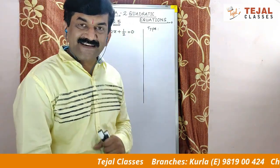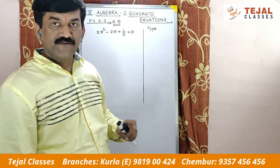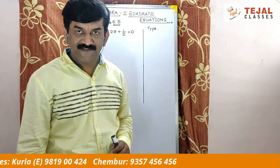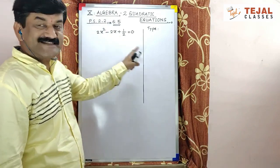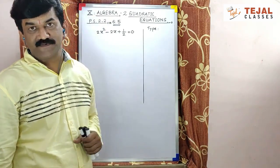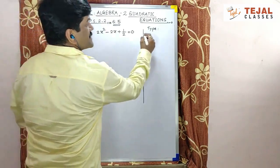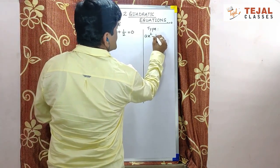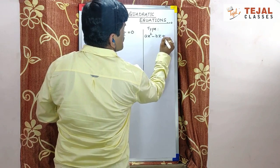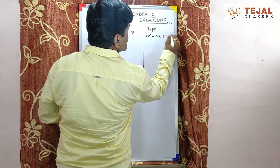Hello, practice set 2.2, question number 5. See carefully. Once again, there is a standard quadratic type. My type kaunsa hai, dekho? Ax² minus bx plus c equal to 0.